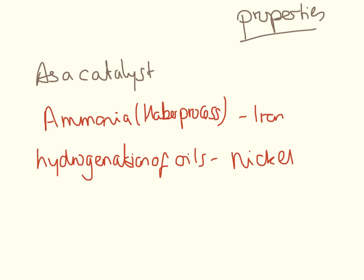The last property that you need to know about is that transition metals make really good catalysts. A couple that you've probably come across before are iron as the catalyst in the production of ammonia in the Haber process, and nickel as the catalyst in the hydrogenation of oils.